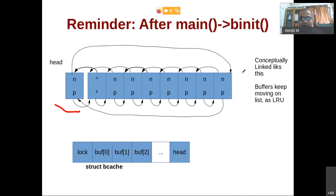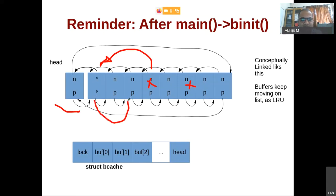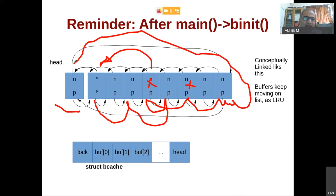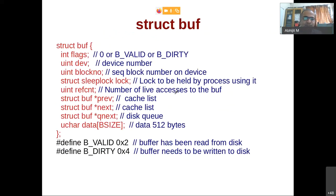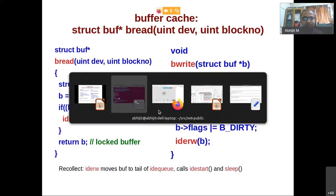Why is the list doubly circular? In future use, buffers keep moving around in the list. When a buffer is accessed, it moves toward the head (MRU end). The least recently used buffer will be at the tail. The list always contains all 30 buffers — no buffer ever leaves the cache. The head's next pointer always points to the MRU buffer, and head's prev always points to the LRU buffer.